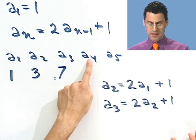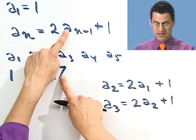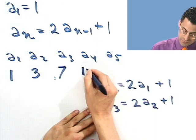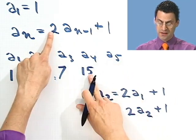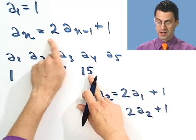What would this be? Well, this would be 2 times the previous thing, so that would be 14 plus 1 is 15. What would this be? This would be 2 times the previous thing, which would be 30 plus 1 is 31.